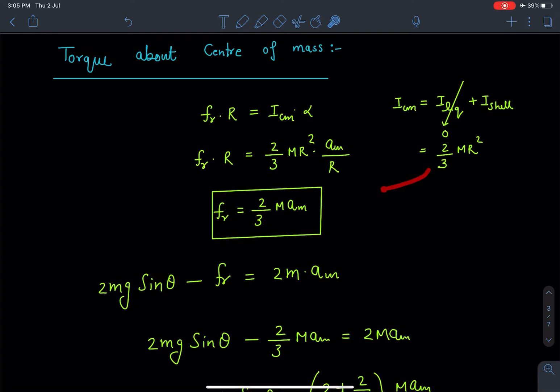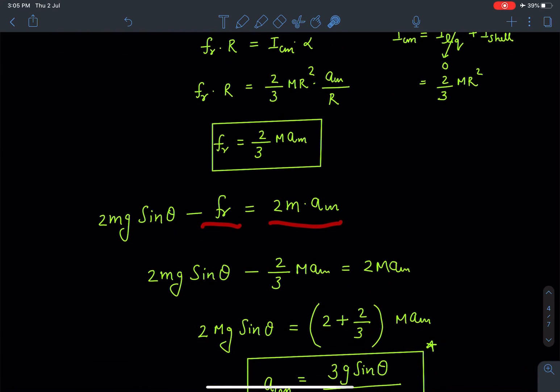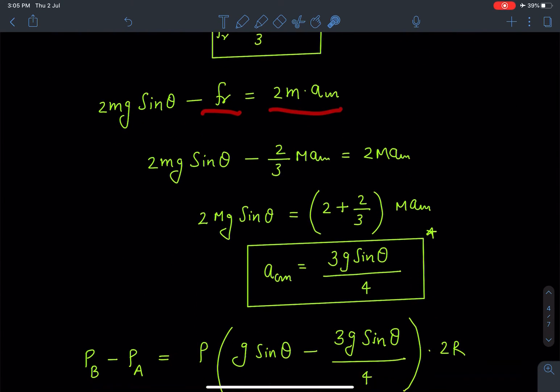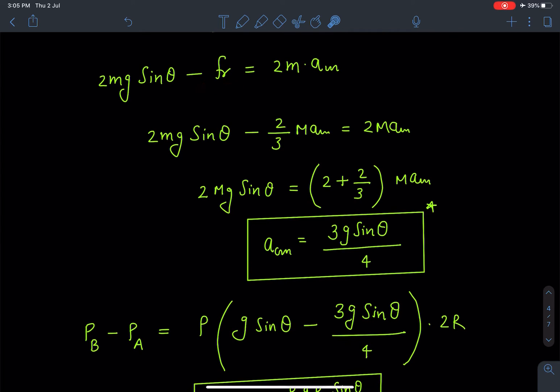Now if we substitute this value of (2/3)MR² and a_CM equal to Rα we are going to get friction value which comes as (2/3)m a_CM. Now if we substitute this friction value in first equation which is 2mg sinθ - F_R = 2m a_CM, we are going to get the value of a_CM as 3g sinθ/4.